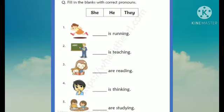First, you can see here, a girl is running. For girl, which pronoun should we use? We use she. For girl, we use she. So, the sentence becomes, she is running.